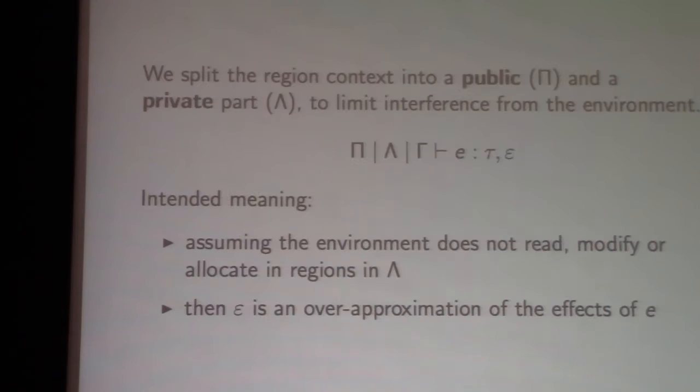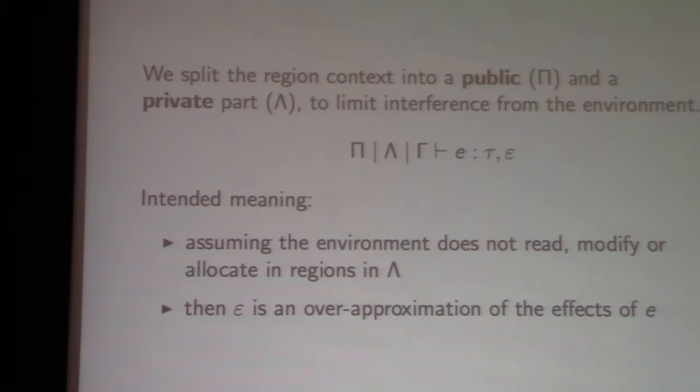The region context is split into two parts: a public part and a private part, which are just lists of regions. The idea is that the environment is allowed to access references in public regions freely, but it's not allowed to access references in private regions. The full typing judgment has an effect annotation whose intended meaning is: assuming the environment only accesses public regions, then epsilon is an over-approximation of the possible effects of the expression.